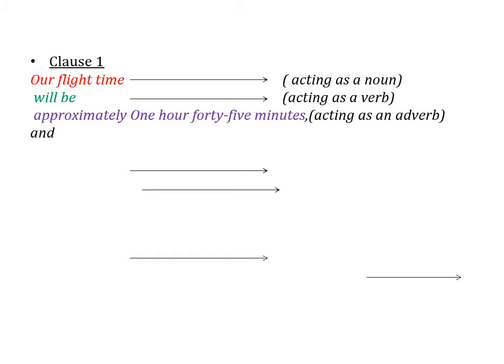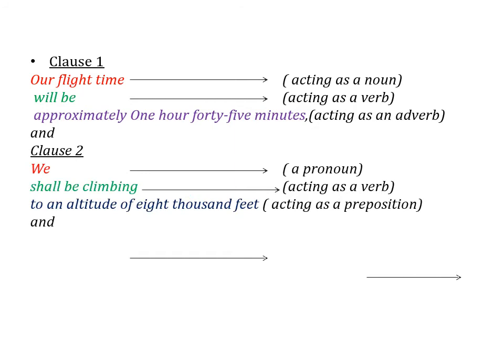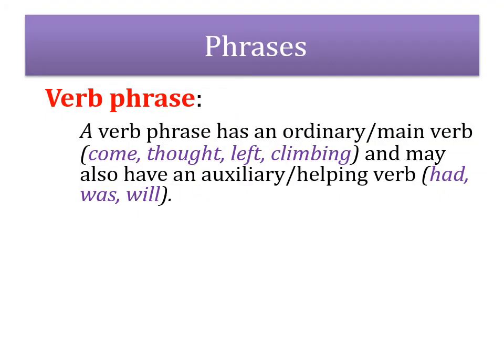In the next sentence 'Our flight time will be approximately one hour 45 minutes' — 'our flight time' acts like a noun, 'will be' is the verb, and 'approximately one hour 45 minutes' is acting like an adverb. Then we have clause two: 'we shall be climbing to an altitude of 8,000 feet' — 'we' is a pronoun, 'shall be climbing' is the verb phrase, and 'to an altitude of 8,000 feet' is a prepositional phrase starting with the preposition 'to.'